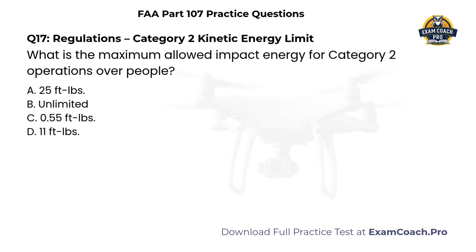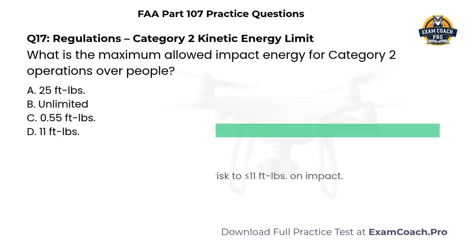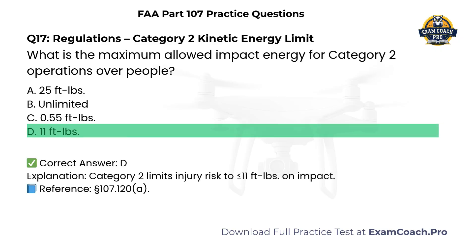Regulations. Category 2. Kinetic energy limit. What is the maximum allowed impact energy for Category 2 operations over people? A. 25 foot-pounds. B. Unlimited. C. 0.55 foot-pounds. D. 11 foot-pounds. Correct answer: D. Category 2 limits injury risk to 11 foot-pounds or less on impact.